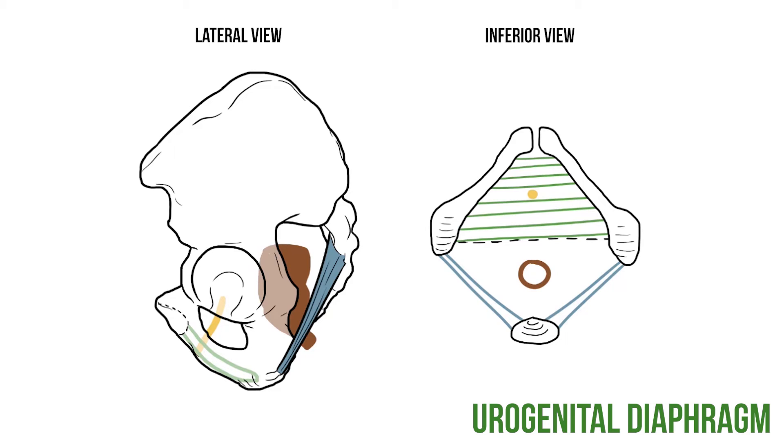You may also hear this inferior layer called the perineal membrane. Between these two layers is a space, known as the deep perineal pouch, and even the diaphragm deniers accept the presence of this pouch.